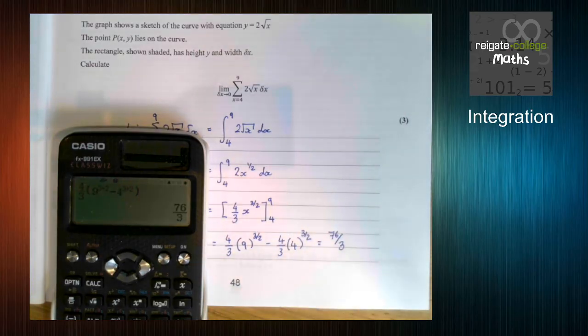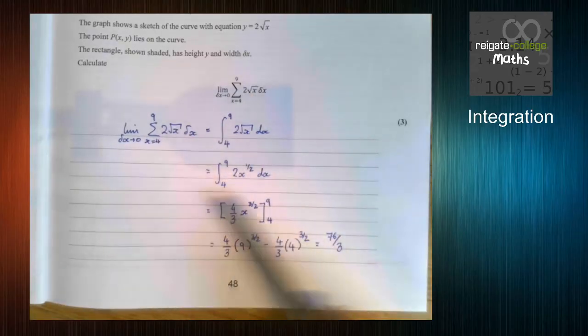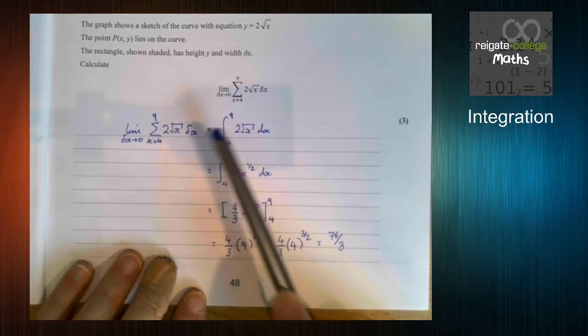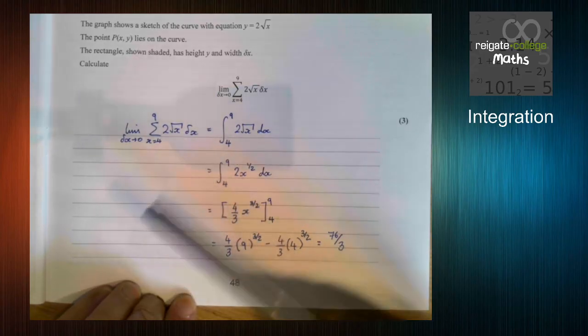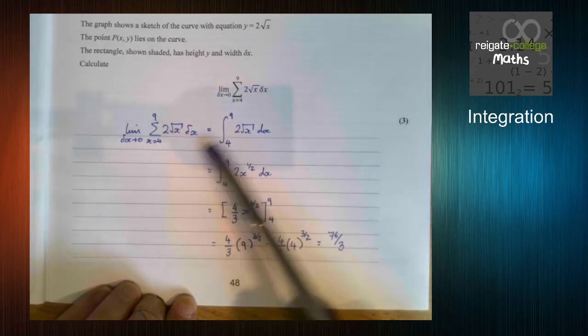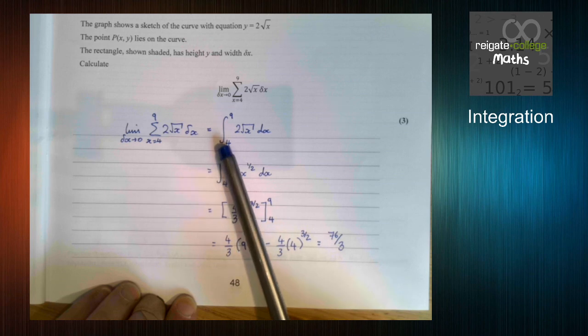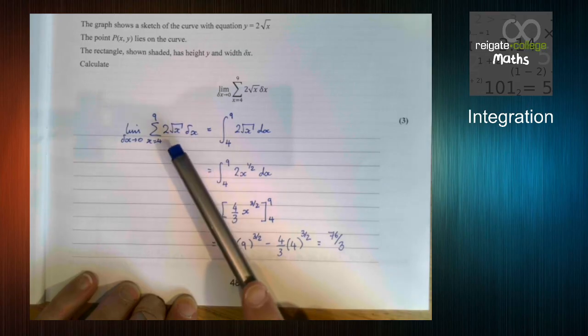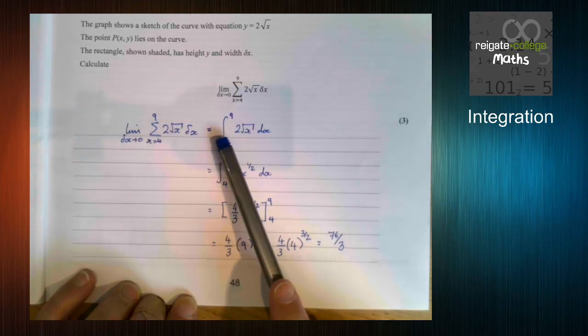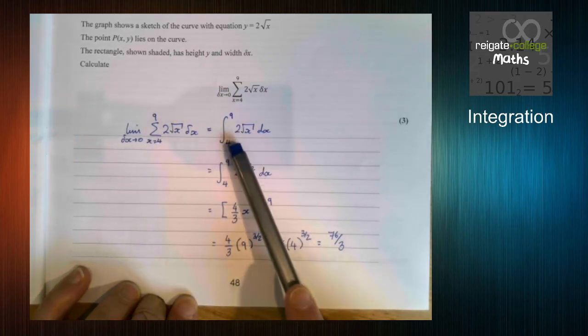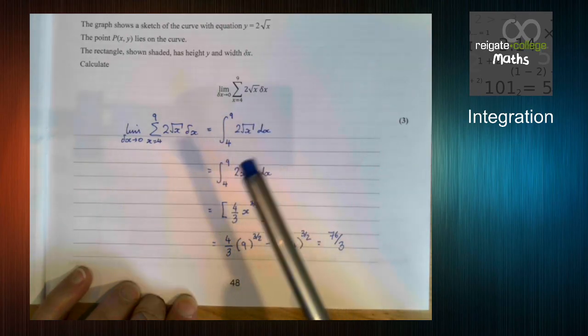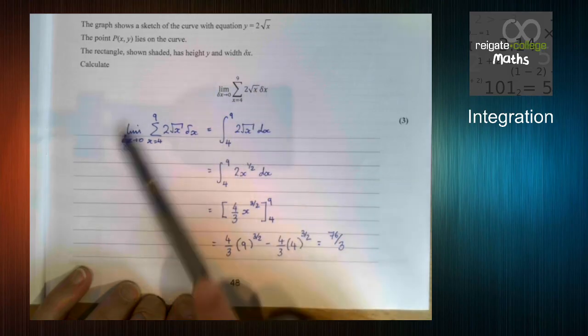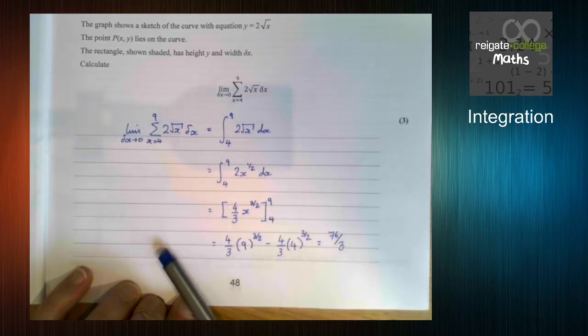And that's what you need to worry about in terms of this idea here, is that these are identical things. Now, there isn't any practice of this specific relationship in the textbook, or at least not in the Pearson textbook. But that's all it is. It's just knowing that this is the same as this. Once you've got that, it's just normal integration. So hopefully, that should be fine. Thank you for watching.